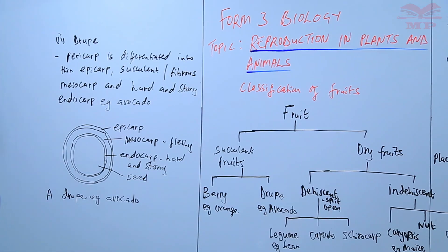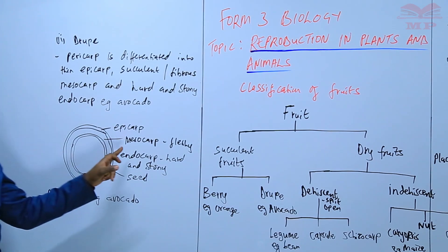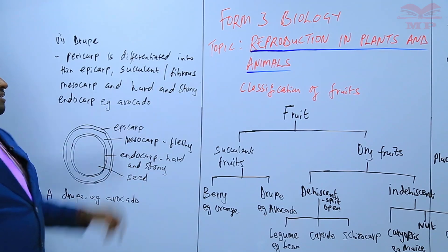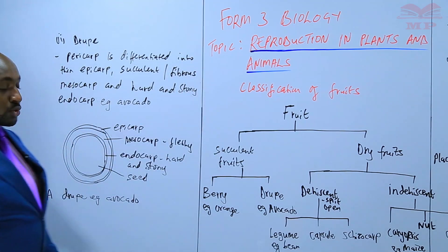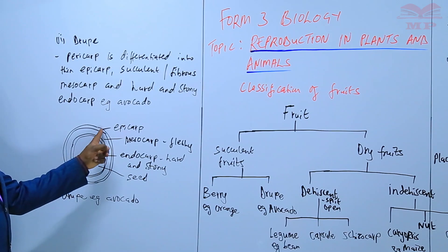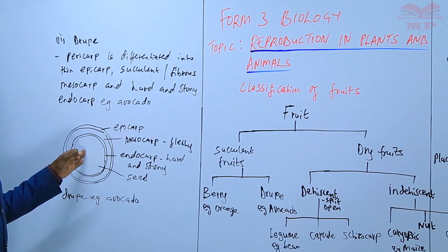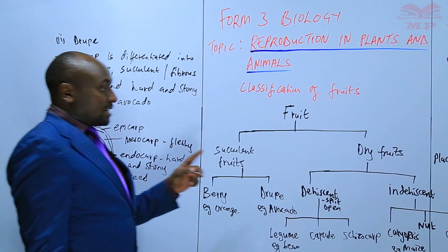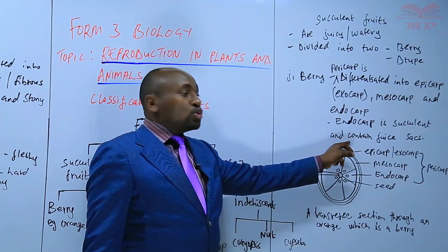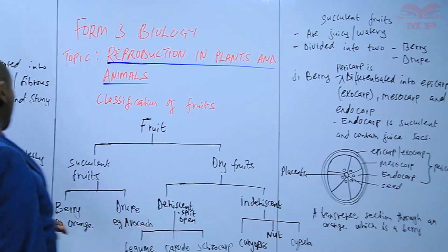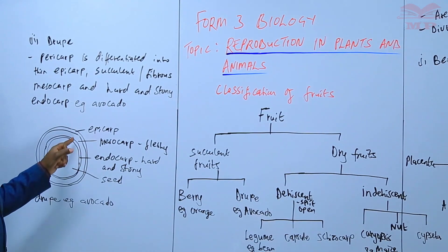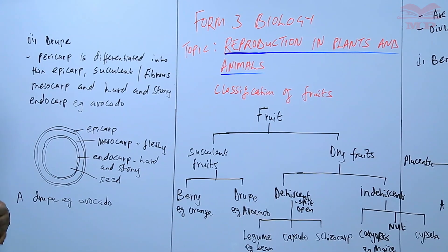A drupe can also be a coconut, whereby instead of the mesocarp being fleshy, it can also be fibrous — fibrous in the case of a coconut. A coconut is also an example of a drupe. What differentiates the drupe and the berry is that in a berry the endocarp is succulent and contains juice sacs, but in the case of a drupe the endocarp is hard and stony. But in both cases the mesocarp is succulent.